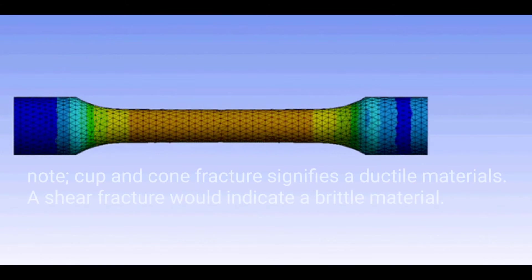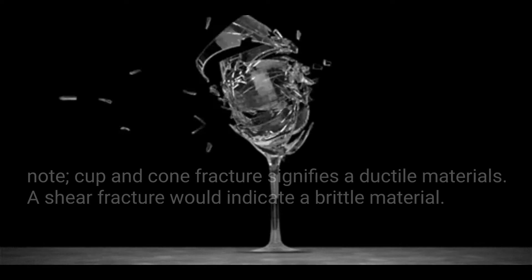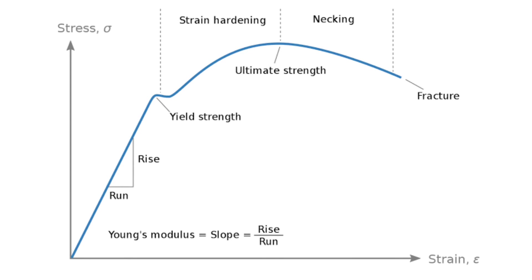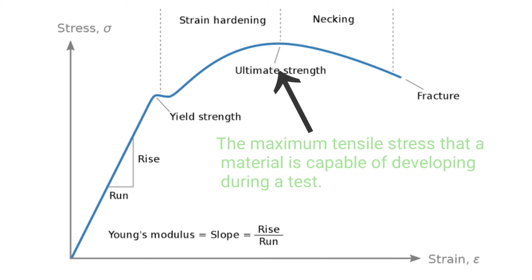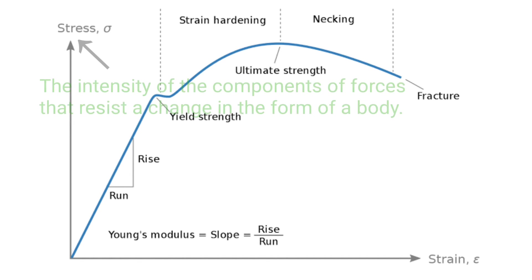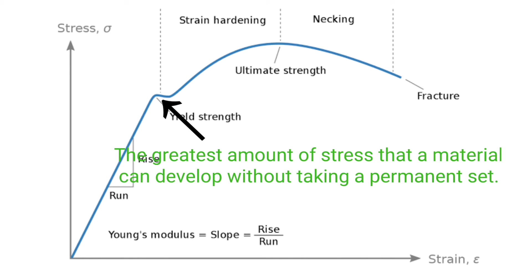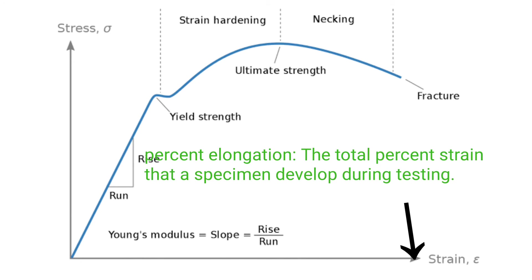Note: Cup and cone fractures signify a ductile material. A shear fracture would indicate a brittle material. A brief description of the curve: Ultimate Tensile Strength is the maximum tensile stress that a material is capable of developing during a test. Load is the applied force. Stress is the intensity of the components of forces that resist a change in the form of a body. Elastic limit is the greatest amount of stress that a material can develop without taking a permanent set. Percent elongation is the total percent strain that a specimen develops during testing.